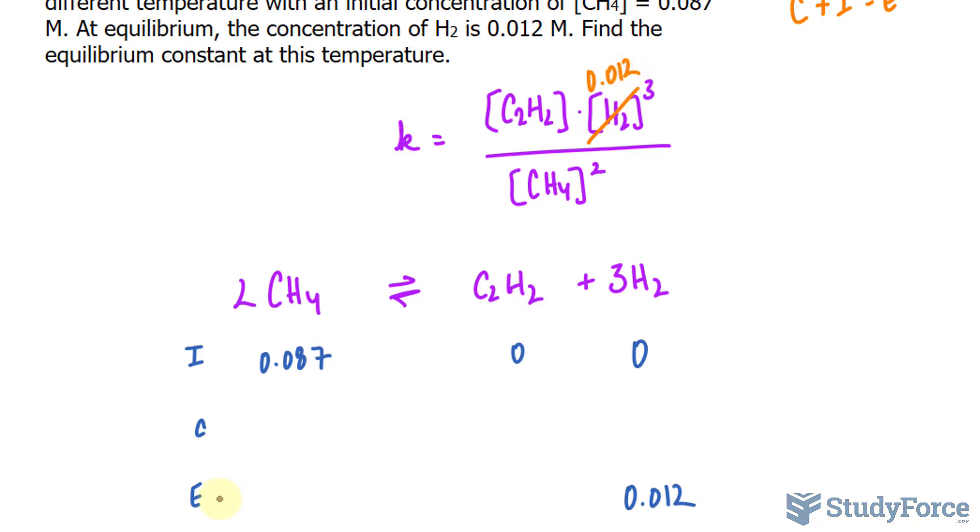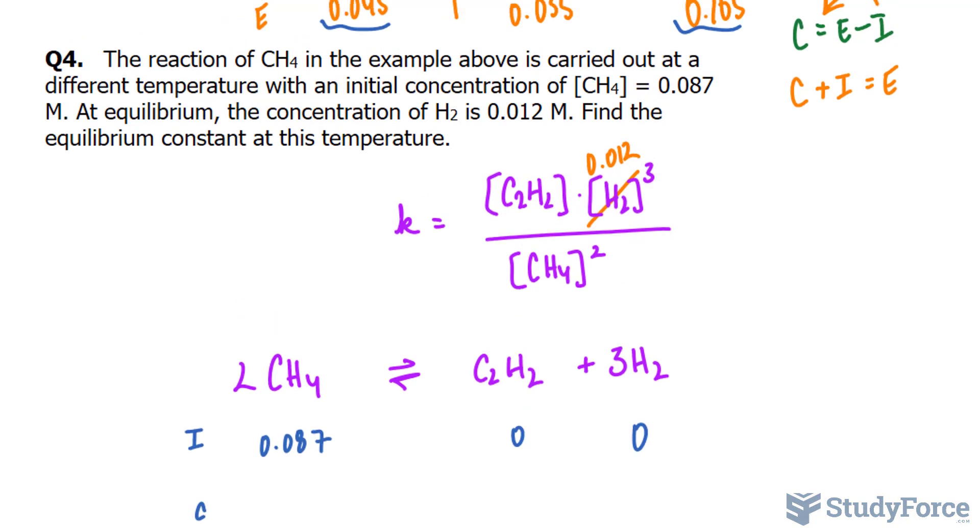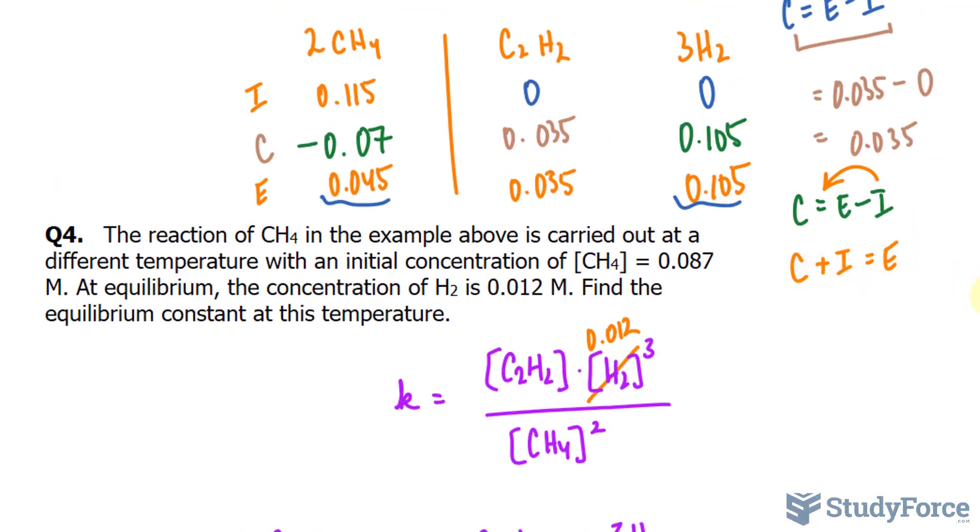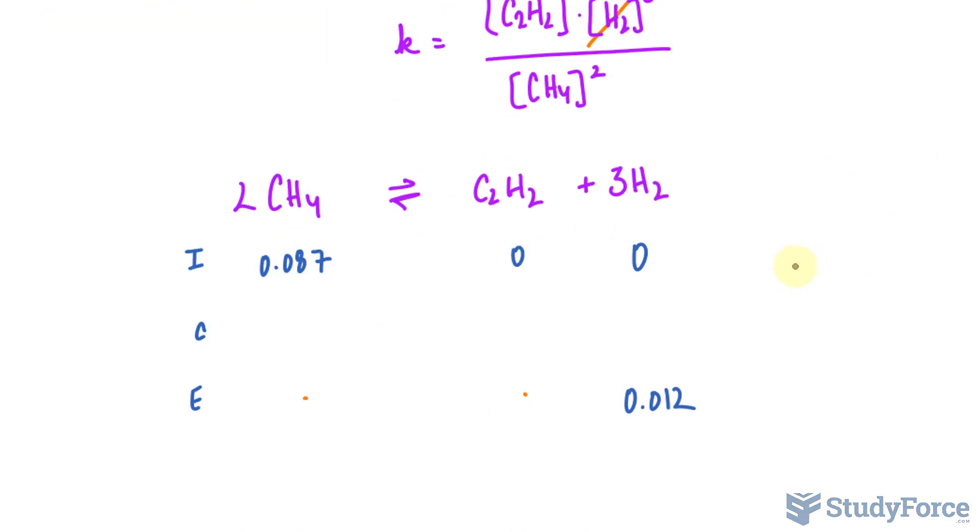To find out the equilibrium concentrations for the other species, we first need to find the change in the concentration for H2, which we can then relate to the other molecules. And to find the change, we use the formula C plus I equals E. C plus I equals E, where we already know E is 0.012. We know the initial is 0, therefore C plus 0 is C and that's 0.012. I'll place that right here.